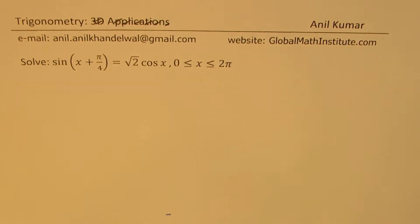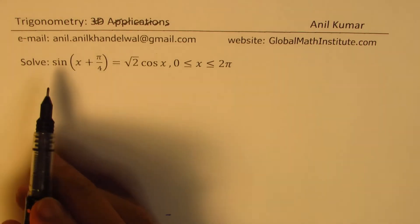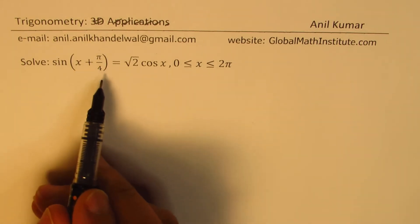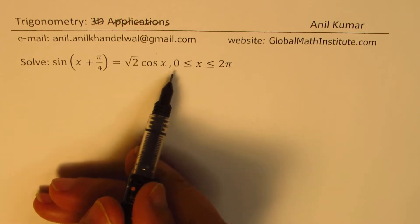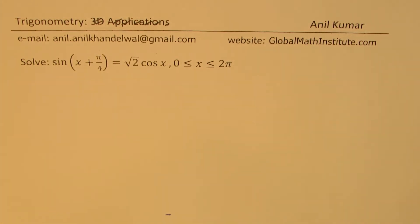The equation given to us is sin(x + π/4) = √2 cos x, where x is between 0 to 2π. You can always pause the video, answer the question, and then look into my suggestions.